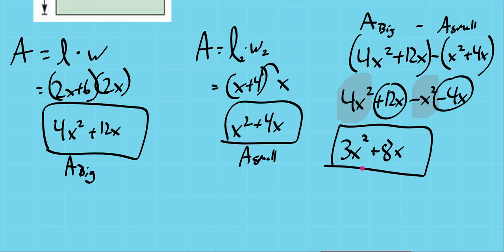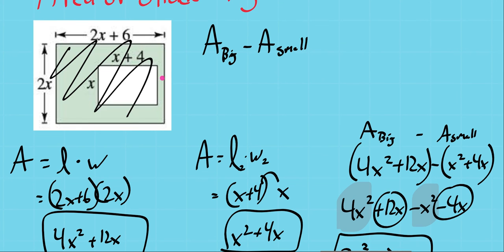So this 3x squared plus 8x is our shaded area. So we found the area of the big shape, area of the small shape, subtracted them. That made us use our polynomial multiplication skills and our polynomial subtraction skills. Well, addition subtraction skills.